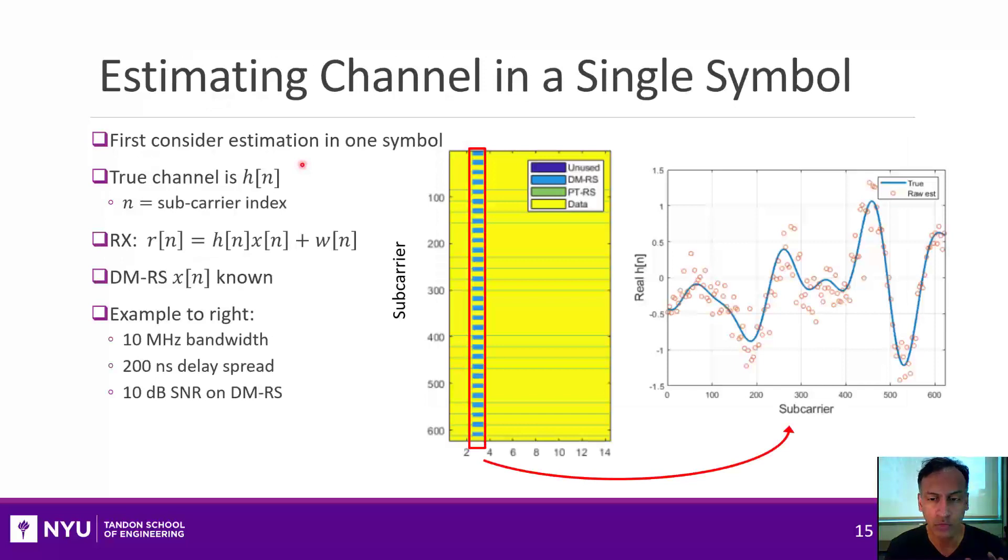All right, now that we have figured out how to place these reference symbols, let's talk about channel estimation from these reference symbols. So as I showed you in the previous slide, I've just configured in this case to have the reference symbols only on one time. They can be on multiple OFDM symbols in the slot. But in this case, I just put them on one time. And they're indicated in these blue resource elements here. So let's take a look at the channel at that one OFDM symbol. So that's highlighted here in red.